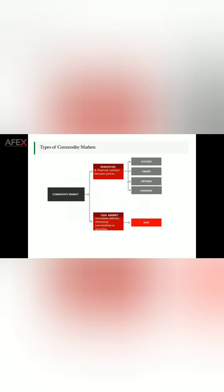Commodity markets fall into two broad categories: the derivative space and the cash markets. The cash market is also known as the spot market, where there is actual immediate delivery of the underlying asset — you're trading the actual assets, and there is usually immediate delivery. For derivatives, these are standardized contracts between parties with a defined time of delivery. Examples include forward contracts, options, swaps, and futures contracts.